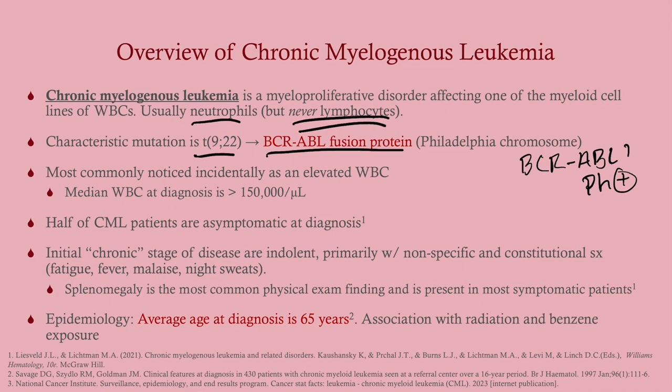It's not fast enough to cause an acute leukemia. About half of CML patients are asymptomatic at diagnosis. If symptomatic, it's going to be very non-specific constitutional signs. About half of symptomatic patients will have splenomegaly — patients won't say 'my spleen is big,' but rather complain of fullness in their belly, or more commonly early satiety, because the spleen presses on the stomach. On physical exam it should be pretty obvious.